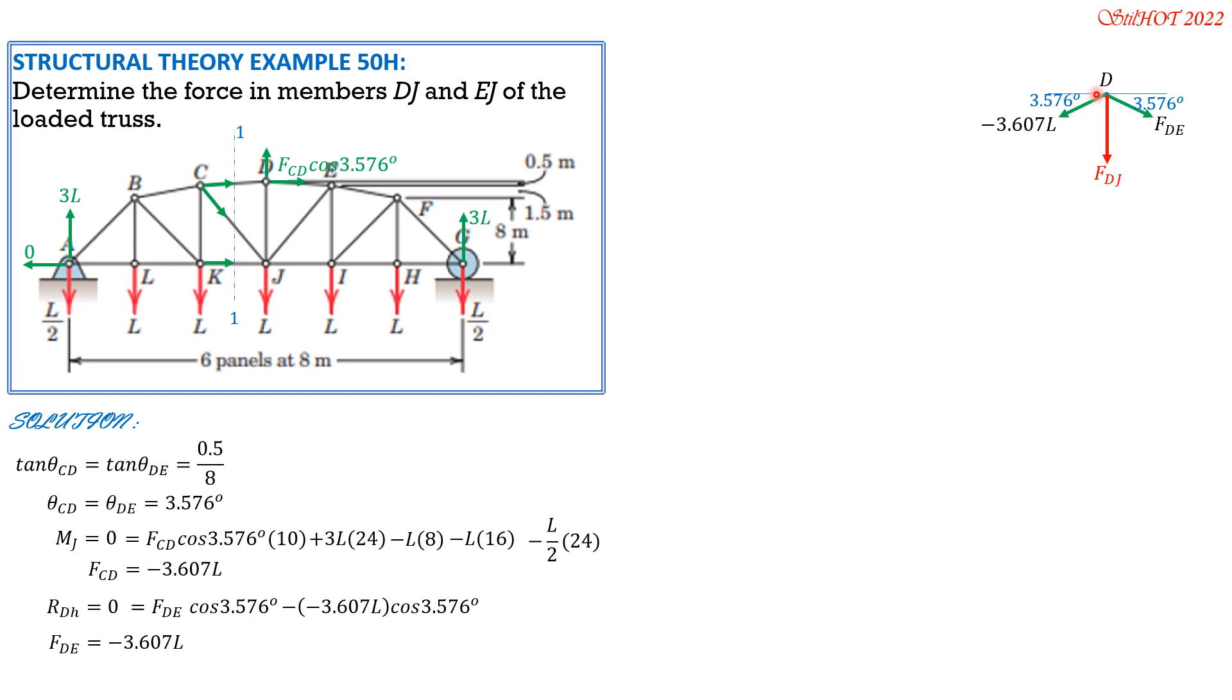Then summation, we set RD vertical equals 0, vertical component of resultant at D equals 0, considering downward positive. So we have FDJ equals FDJ. Since these two are equal, so plus 2 times negative 3.607L sine of 3.576, the vertical component of each, then times 2 because they are equal. So FDJ is positive 0.4500L, and it is positive, so tension.